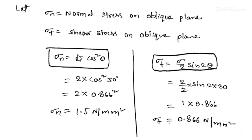First, we require the normal stress on the oblique plane. It is sigma cos square theta. Theta value is given as 30 degrees. Substitute sigma equals 2, and if you simplify, we are getting the normal stress on the oblique plane as sigma n equals 1.5 Newton per mm square.